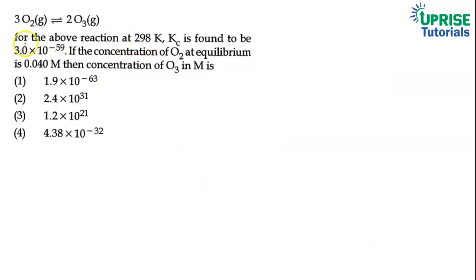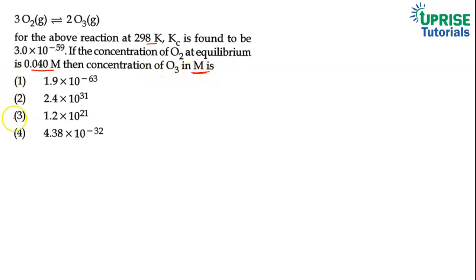Here the given problem is: for the above reaction at 298 Kelvin temperature, Kc is found to be 3.0 × 10⁻⁵⁹. If the concentration of O₂ at equilibrium is 0.040 molar, then the concentration of O₃ in molar is — and four options are given.